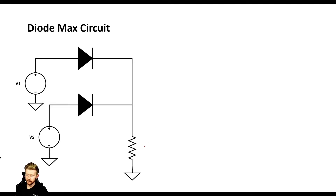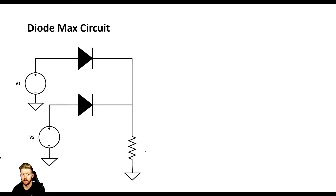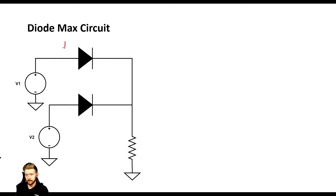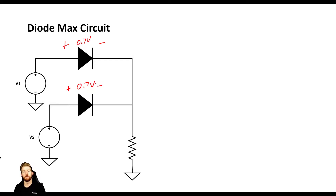In this case the resistor is pulling our signal down to ground, so it's going to let current flow in both directions and pull whatever our signal is down to ground. Now let's make a couple of assumptions. We know that these diodes, whenever they're conducting, are going to have a 0.7 volt drop across them — a pretty solid assumption for the forward direction.